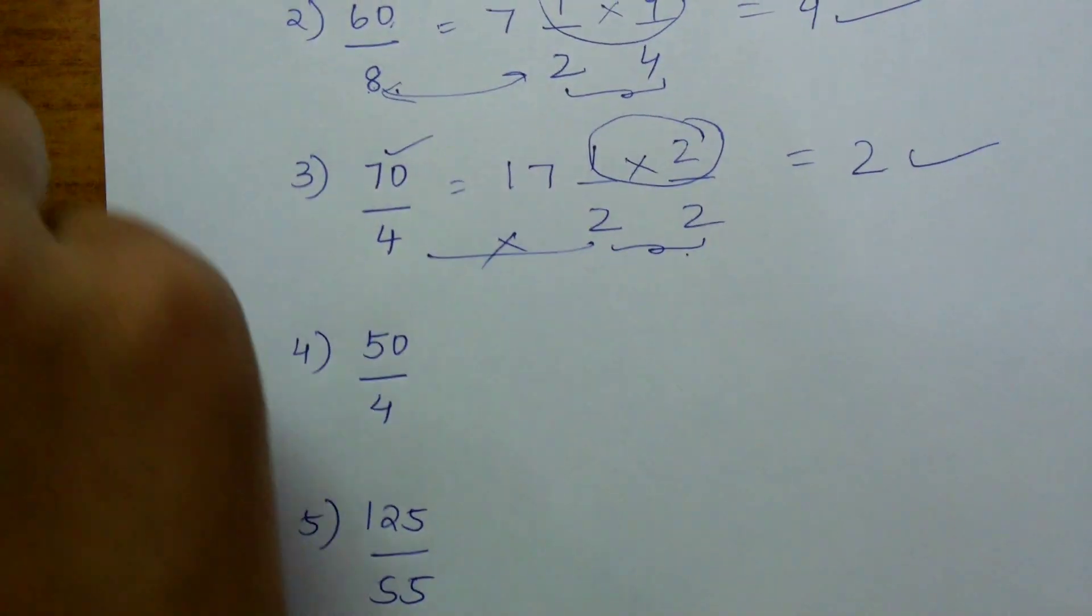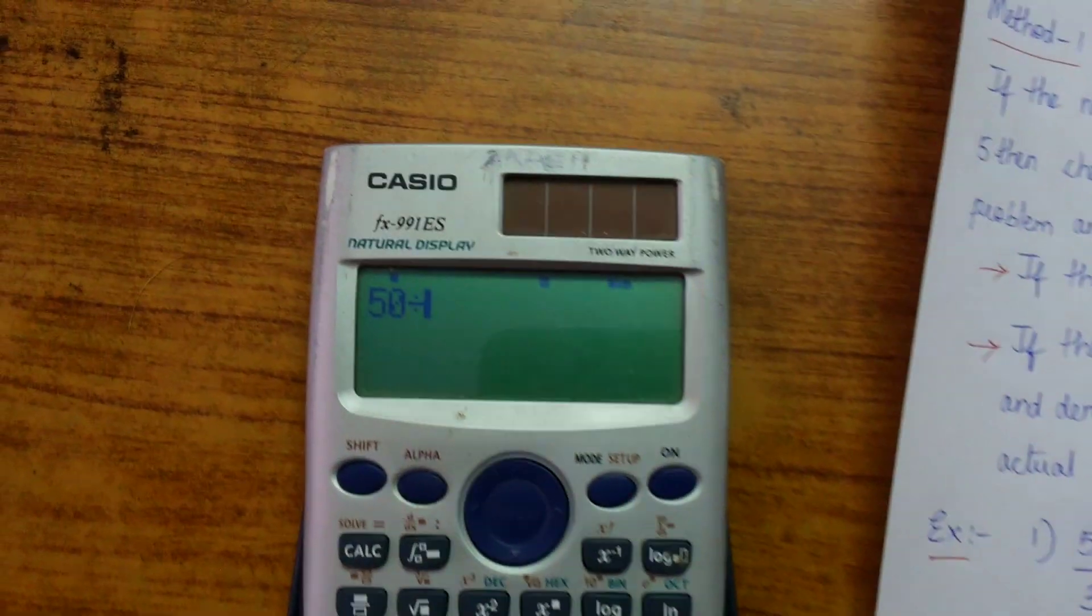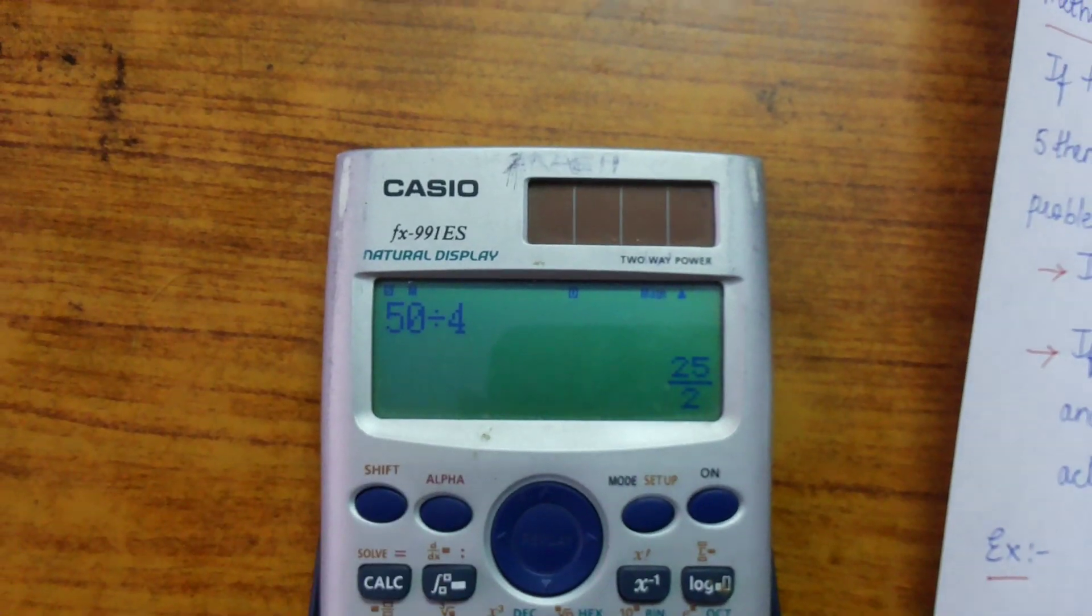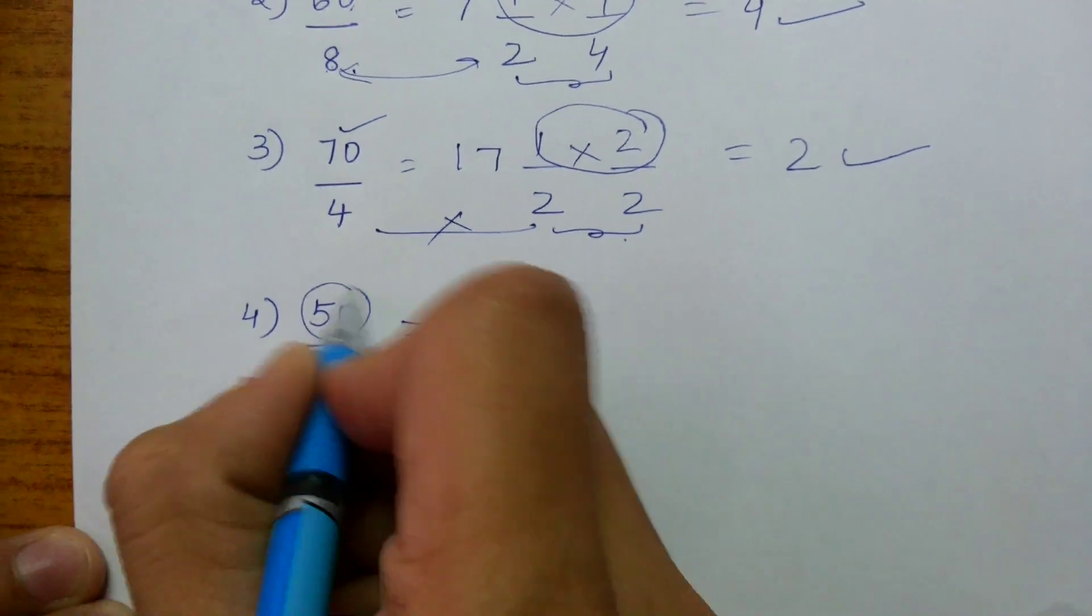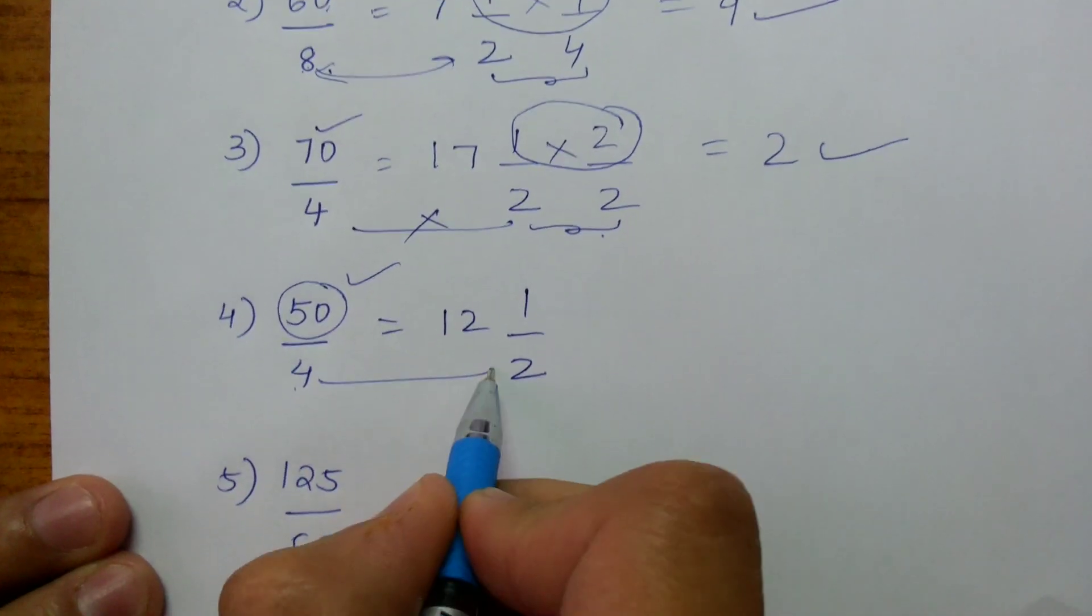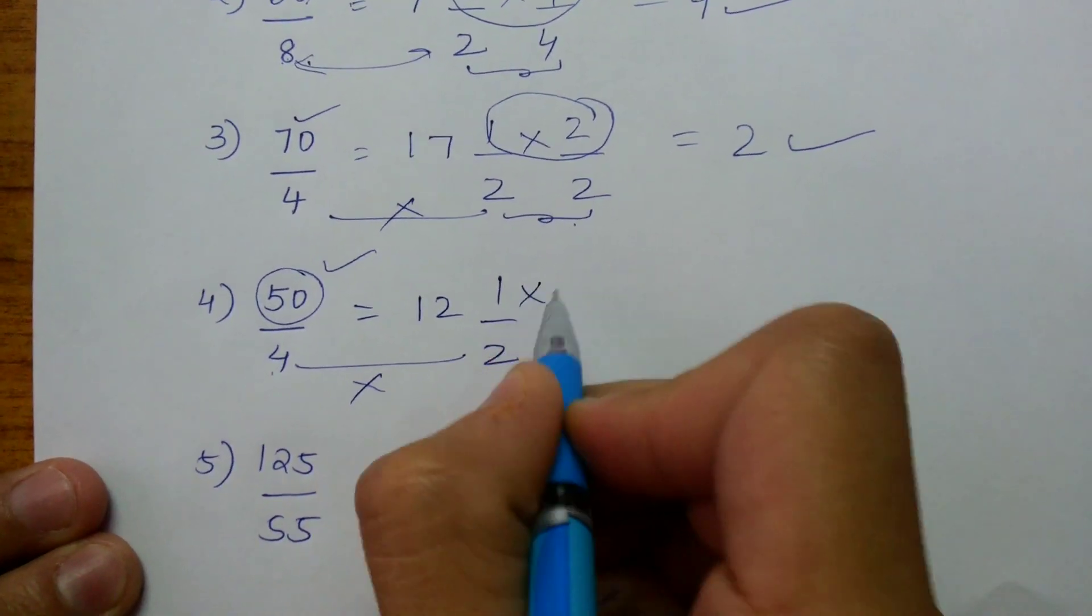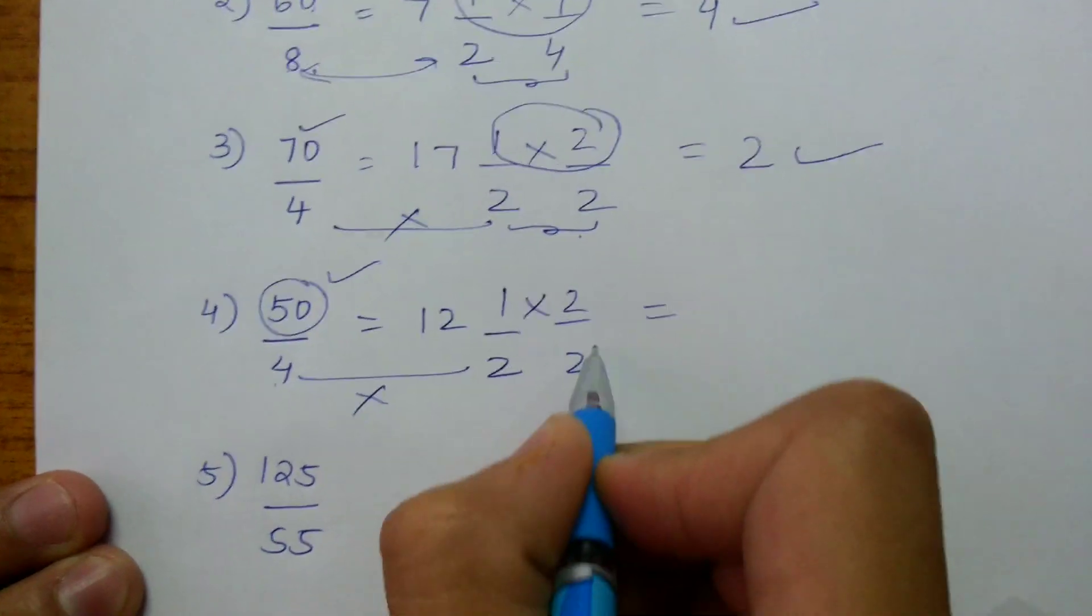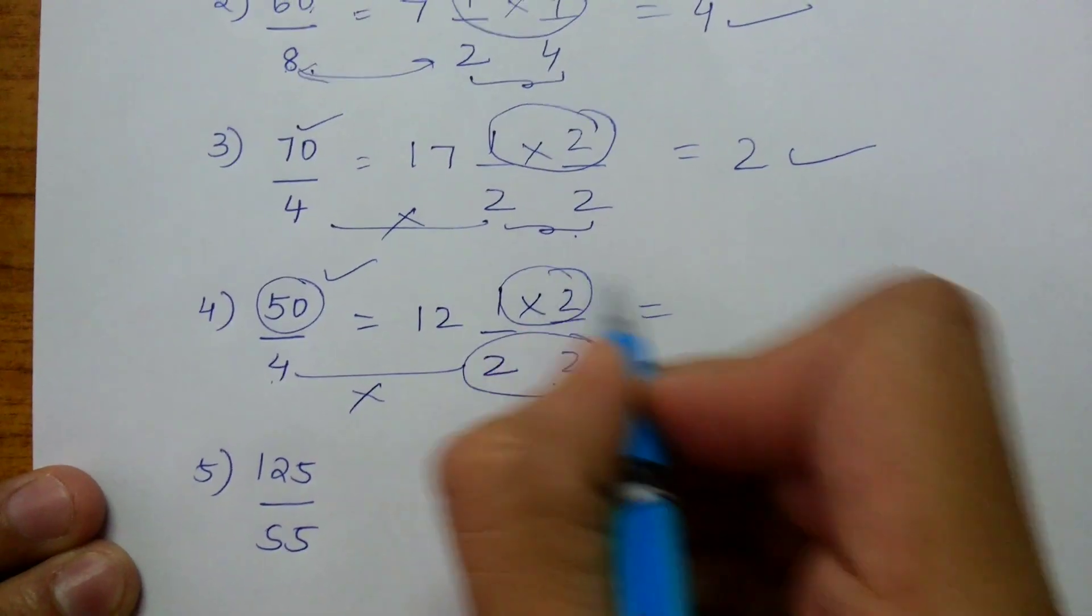Now let us check for 50 by 4. 50 divided by 4. I am calculating. I got 12 1 by 2. Here 50 is a multiple. 4 and 2. These both denominators are not equal. So I am multiplying with 2 by 2 to make it 4. Hence the remainder is 2.